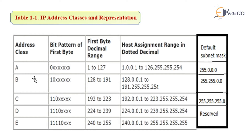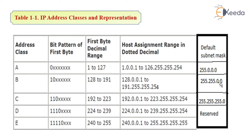Class B has the address range of 128 to 191. That means the range in IPv4 format is 128.0.0.1 to 191.255.255.254. The default subnet mask is 255.255.0.0.